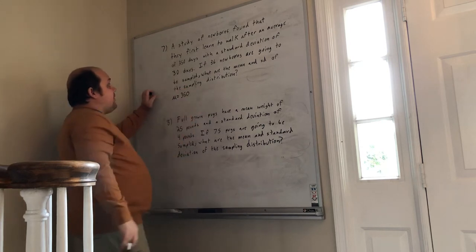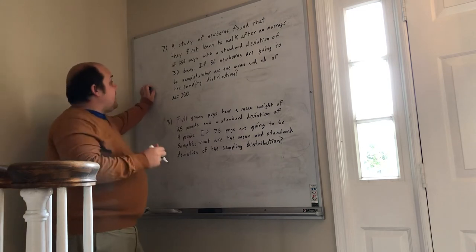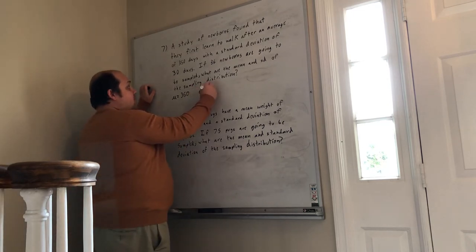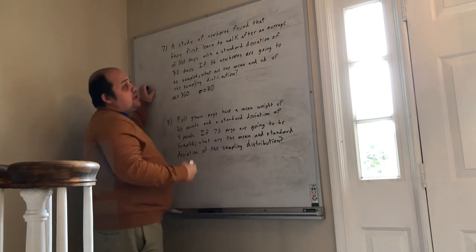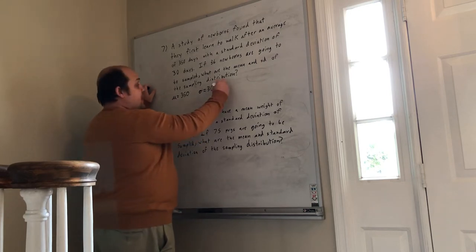They say the standard deviation is 30 days, so I'm going to write sigma equals 30. And they say that we're going to look at 36 newborns, so I'm going to write n equals 36.